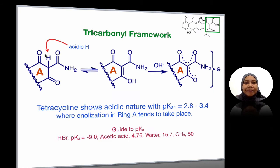At ring A, that particular proton is quite acidic. You can actually form a resonance — rather than three ketones, it prefers to go into this particular form, like an enol. You have this alkene and OH — the enol form.